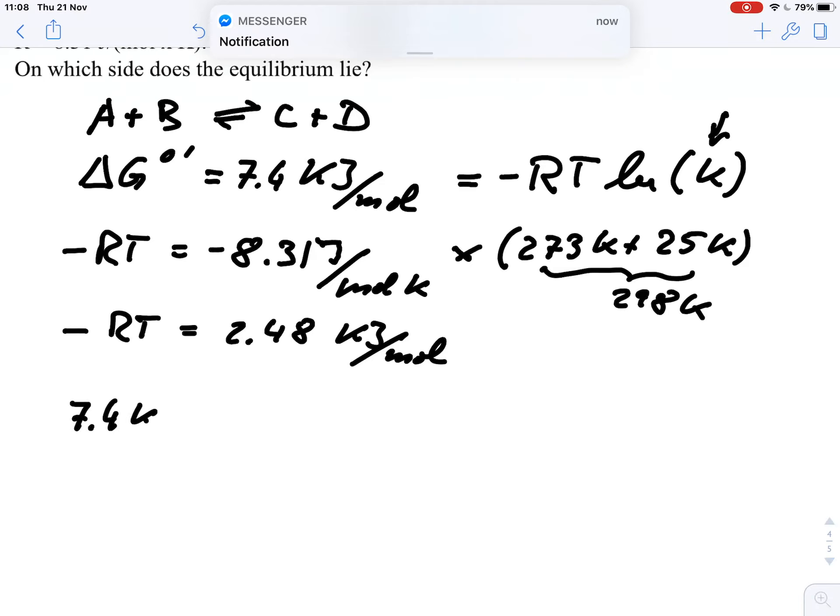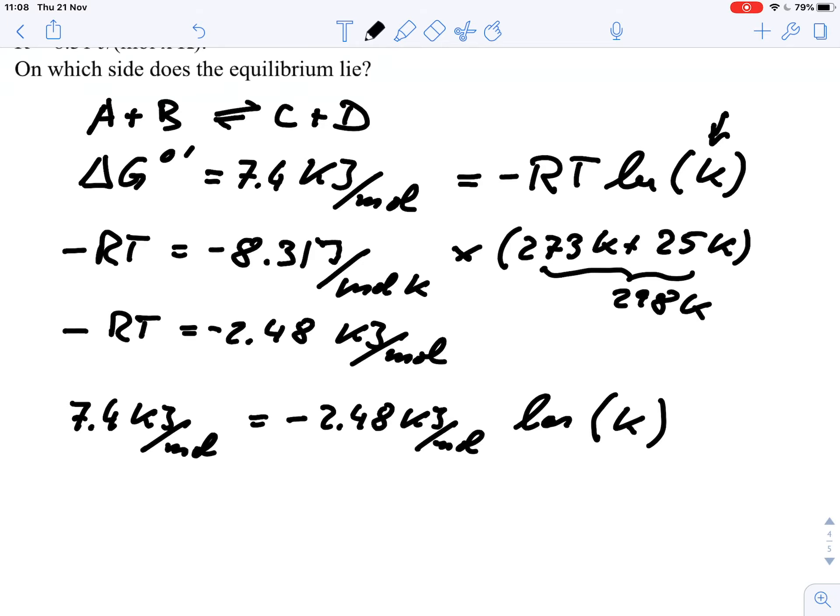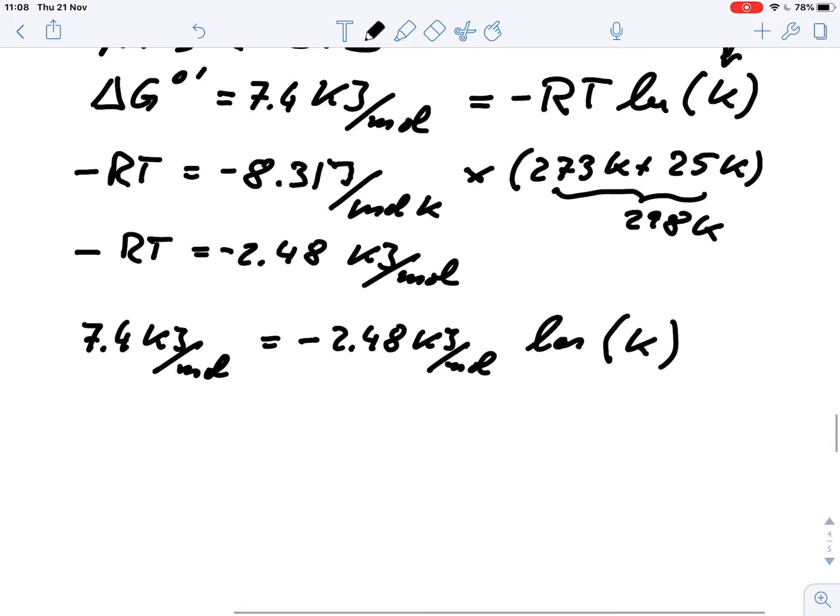So we have in our equation here we have 7.4 kJ per mole equals, and that is a negative here, negative 2.48 kJ per mole times LN of our equilibrium constant.